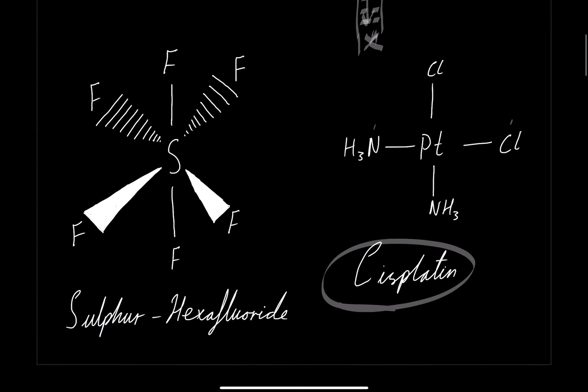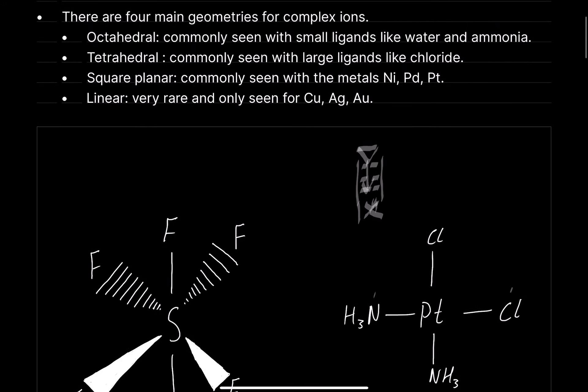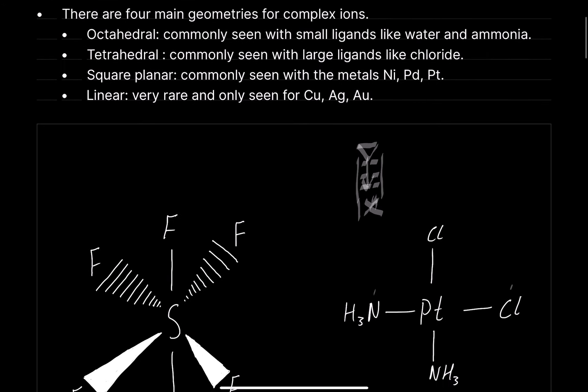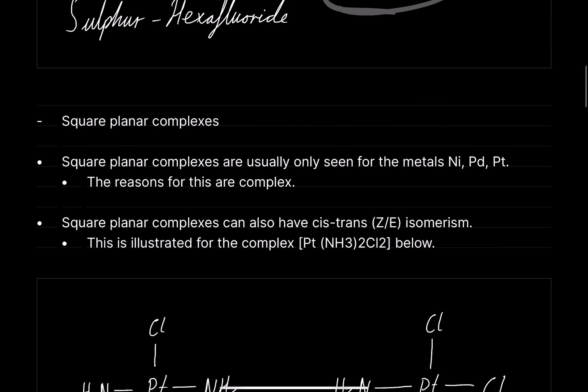In terms of the structure of cisplatin, it is a square planar complex. Square planar complexes are usually only seen for metals such as nickel, palladium, and platinum. Square planar complexes can also have cis-trans or Z/E isomerism, which is a geometric isomerism. This is illustrated for the complex platinum(NH3)2Cl2.